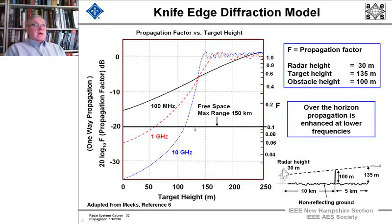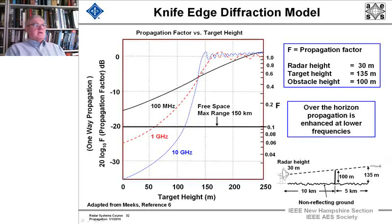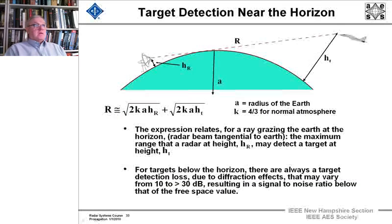And we'd like to know what's the energy dependence as we change the height of the target. You can see that this is the free space max range of the radar. And here, at 135 meters height, is where all frequencies can see it. That height and above, there isn't a problem. But below that height, we have significantly higher propagation factor the lower the frequency is. So over the horizon, propagation is enhanced at lower frequencies.